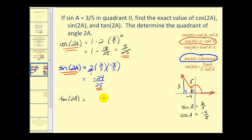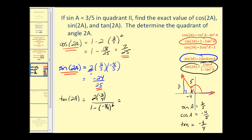Now let's find tangent of two A. Looking at the formula, we need the tangent of angle A. From the reference triangle, tangent A is opposite over adjacent, or three over negative four, so tangent A equals negative three-fourths. Using the double angle formula: two times negative three-fourths over one minus negative three-fourths squared. The numerator simplifies to negative three-halves, and the denominator is one minus nine-sixteenths, which is seven-sixteenths. Dividing by multiplying by the reciprocal gives negative three-halves times sixteen-sevenths, which simplifies to negative twenty-four sevenths for tangent of two A.